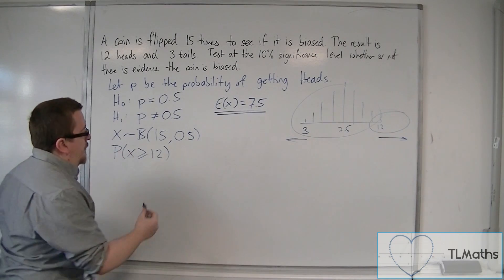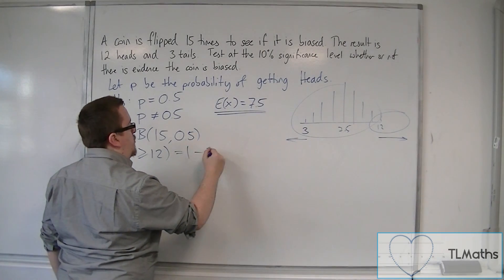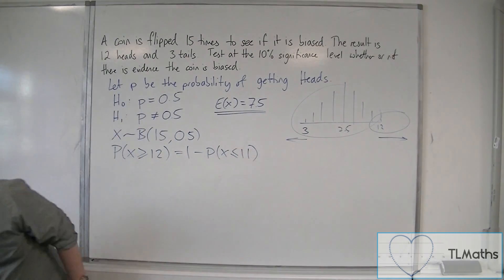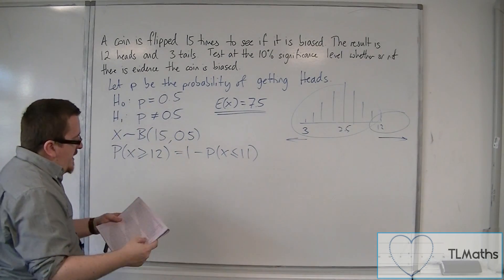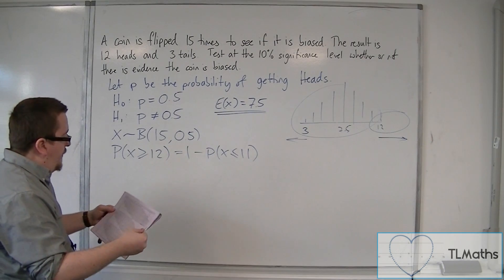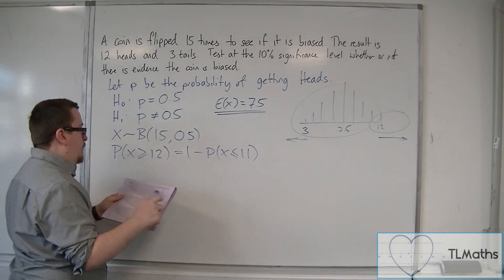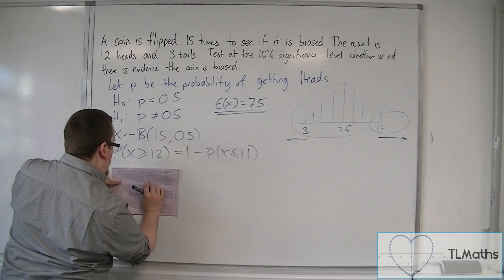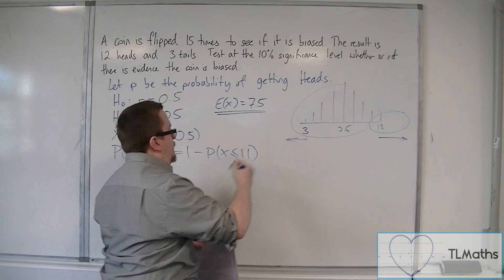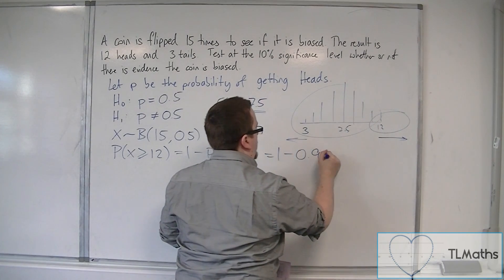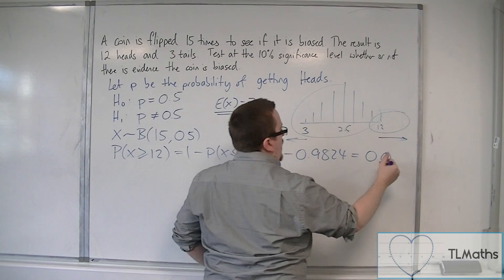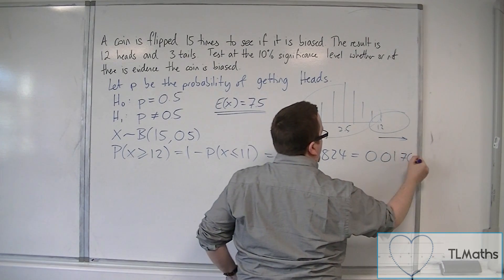So, greater than or equal to 12 is 1 take away the probability of X being less than or equal to 11. So we get to our tables, so n is 15, the probability of 0.5, and we're looking up 11. So that's 0.9824. Now that's 0.0176.